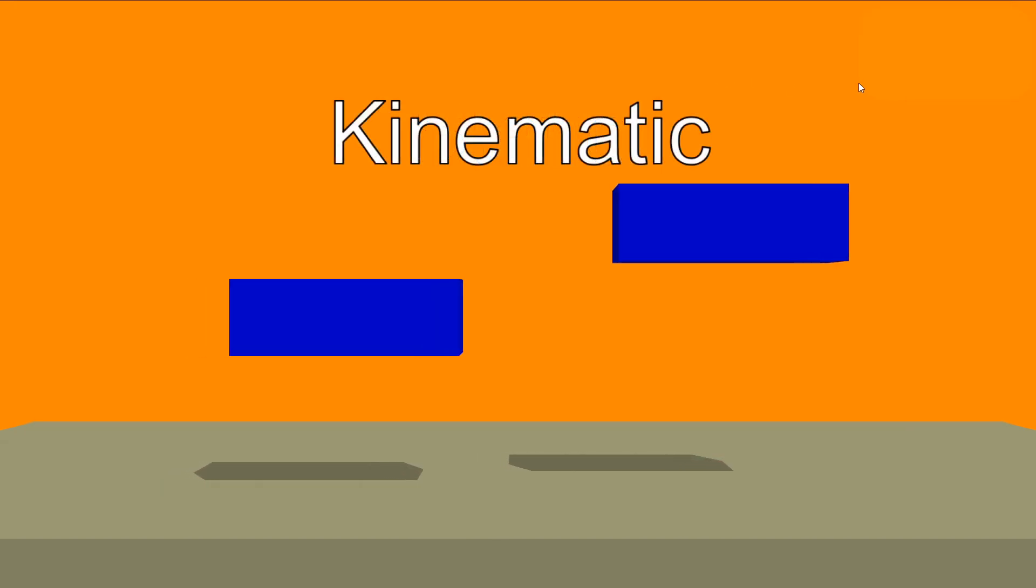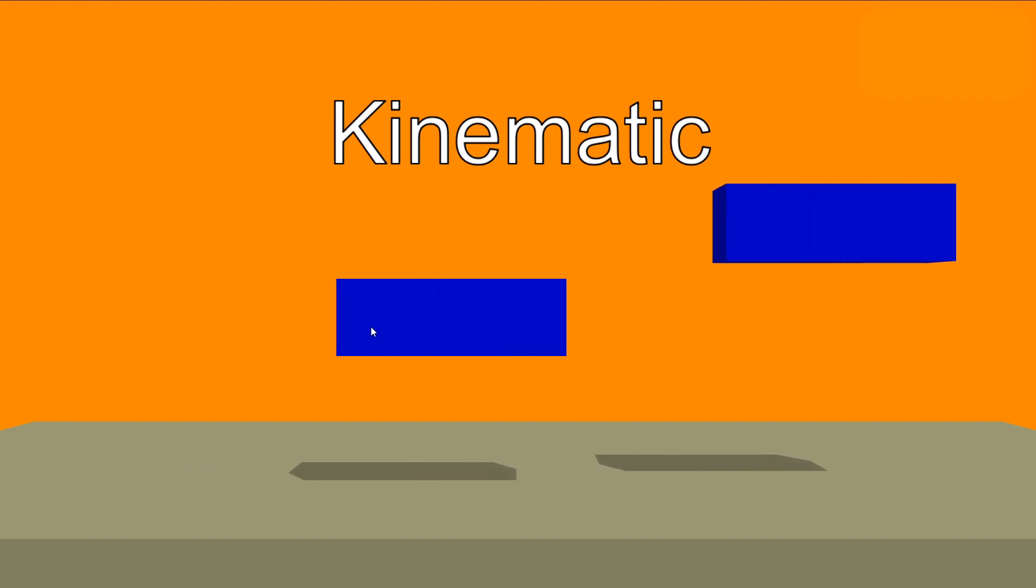You use kinematic physics for objects that you need to move in the game. So for instance a moving platform in your game is not supposed to be static it should be a kinematic object.